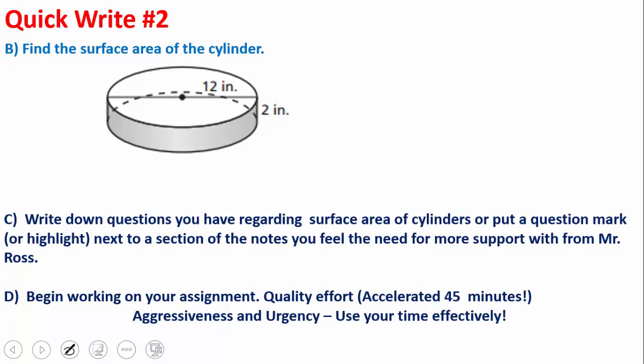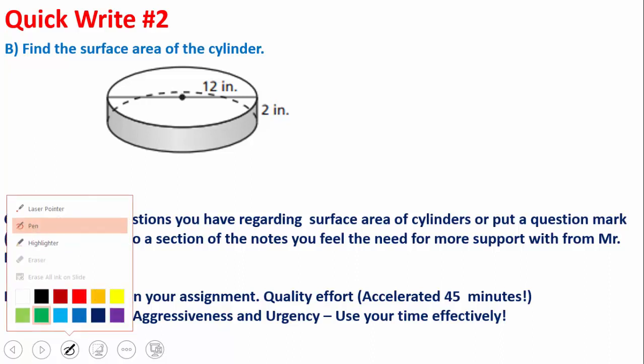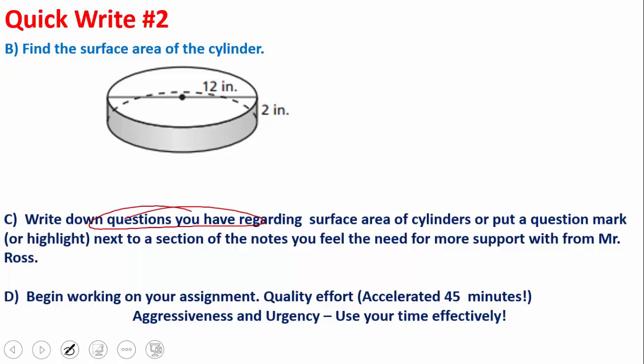Moving right along, our quick write. Find the surface area of this cylinder. Just find the surface area of the entire cylinder. Make a quick drawing, label with the diameter of 12 inches and a height of 2. When you're all done, naturally, you're going to find some questions that you can bring to class about area of cylinders.